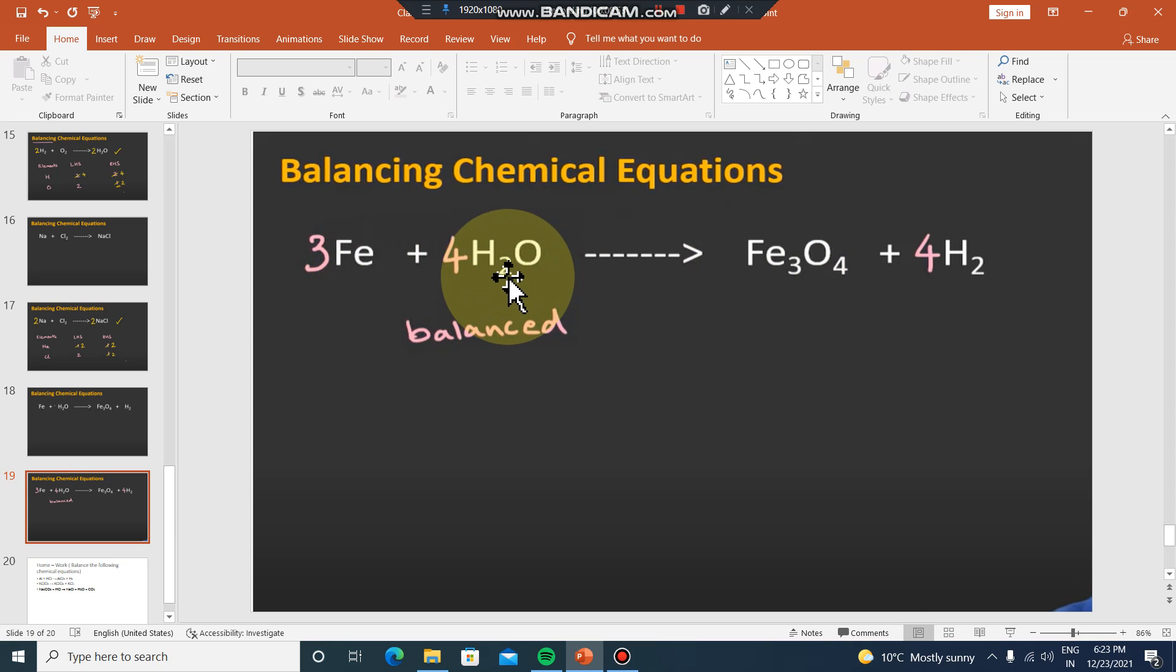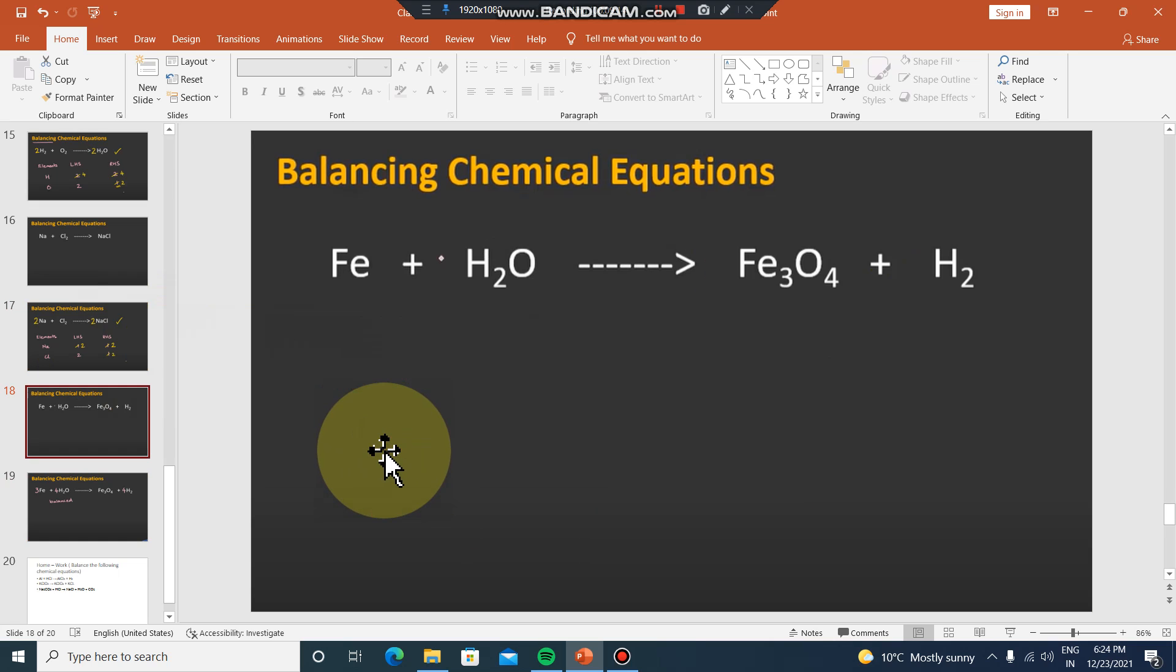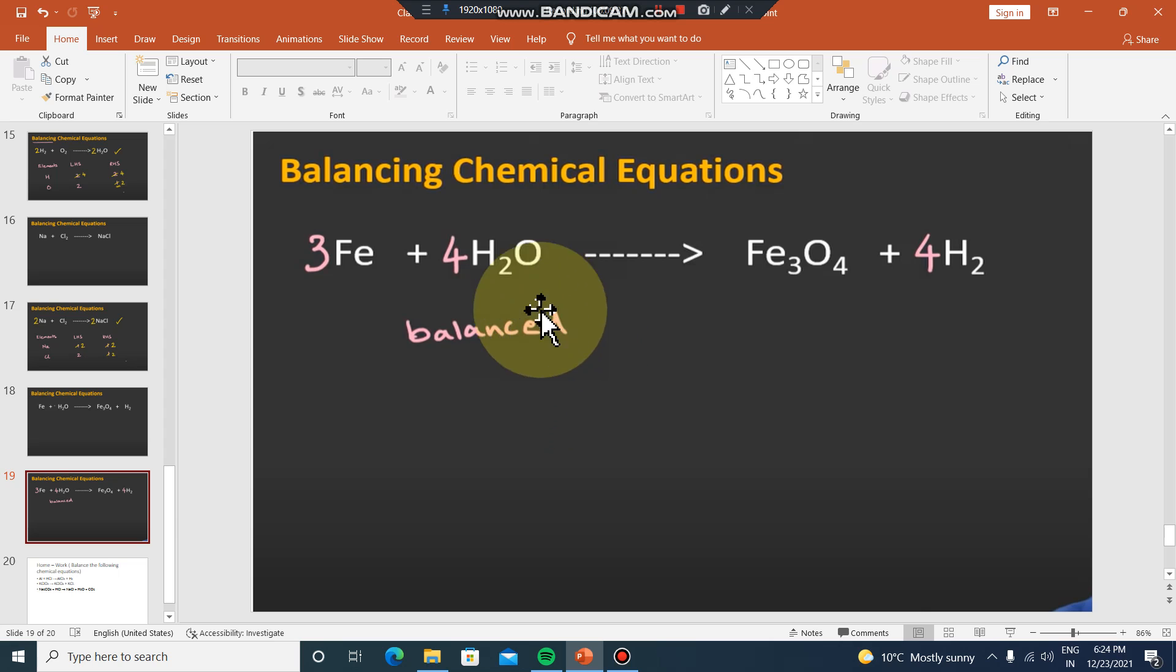So it's correct balancing chemical equation. Iron 3Fe, and water. Iron 3, oxygen 4, and hydrogen 2, 4H2, hydrogen gas, 4. The method is to first write out the elements: iron, hydrogen, oxygen.